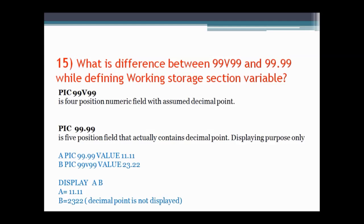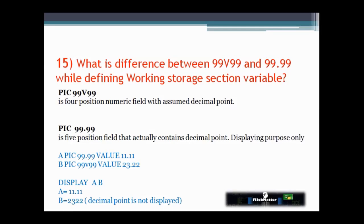The next question asks what the difference is between 99V99 and 99.99 when defining a Working Storage Section variable. A picture clause of 99V99 is a 4-position numeric field with an assumed decimal point, whereas PIC 99.99 is actually a 5-position field that actually contains the decimal point in it and is only for display purpose. An example is given showing assigned values displayed in both variables.